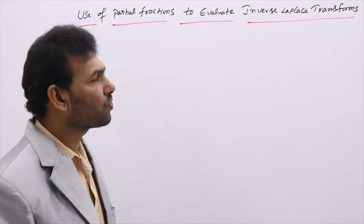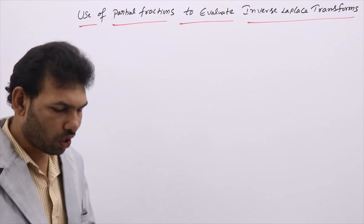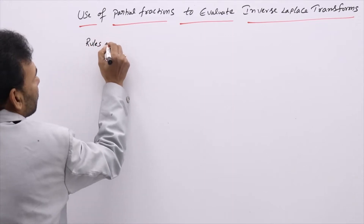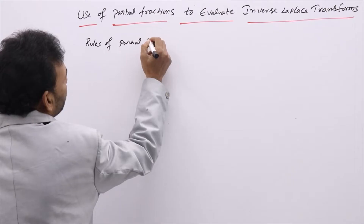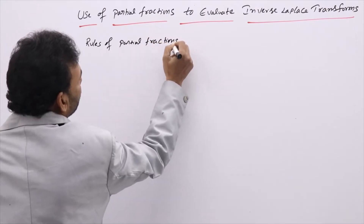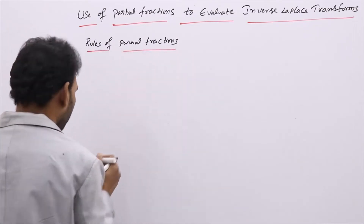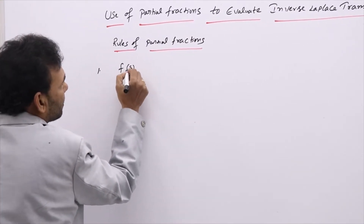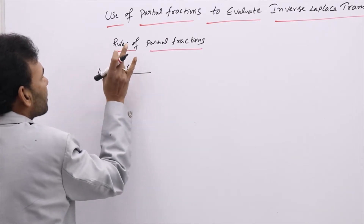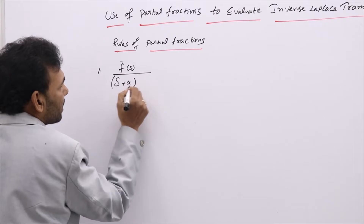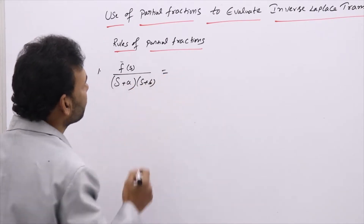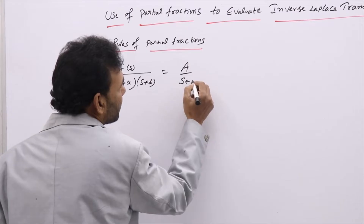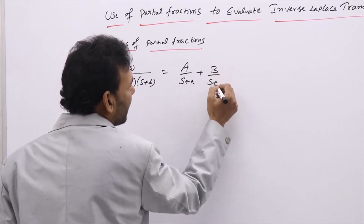Using partial fractions, we are going to evaluate inverse Laplace transforms. You know about partial fraction rules, so let's recall them once. There are many rules and we will use a few here. Rule 1: if you have a function f(s) in the numerator and the denominator is (s+a)(s+b) — linear factors with no squares — then you can split it as A/(s+a) plus B/(s+b).